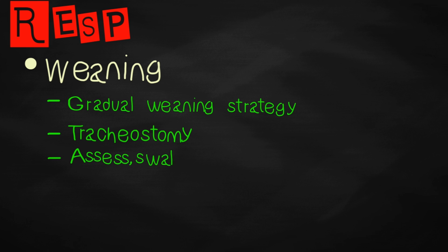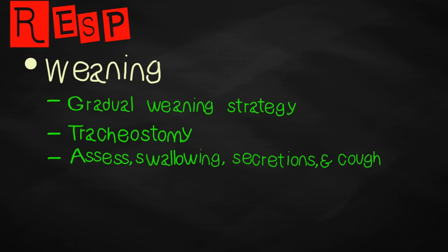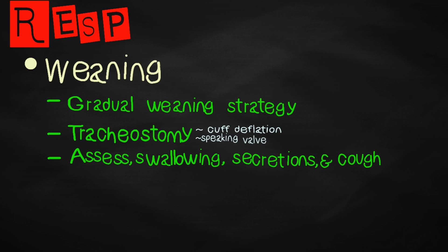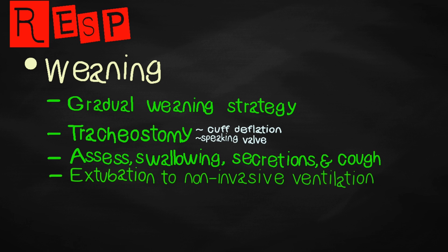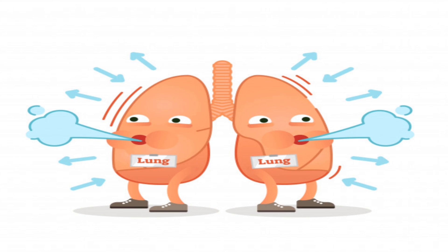The strength of the patient's cough, secretion load, and swallow function should be assessed. In patients with tracheostomy, the ability to tolerate cuff deflation and use of a speaking valve are important indicators of weaning progression. Where available, extubation to non-invasive ventilation may reduce the risk of re-intubation in patients with COPD. This concludes the key points in assessing the patient's respiratory system.